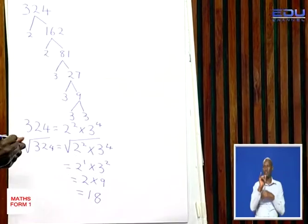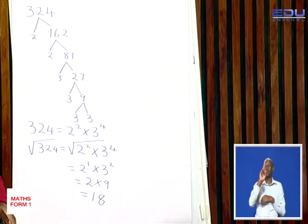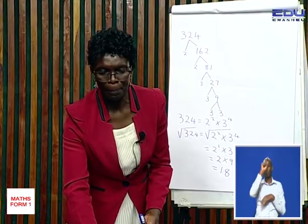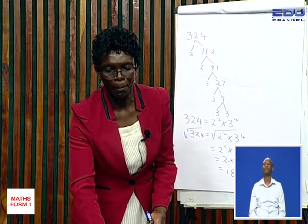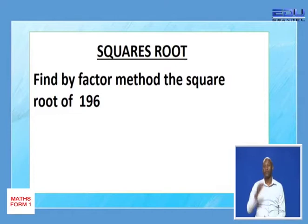That is the factor method of finding the square root. Now, I have a question for you. Find, by factor method, the square root of 196.